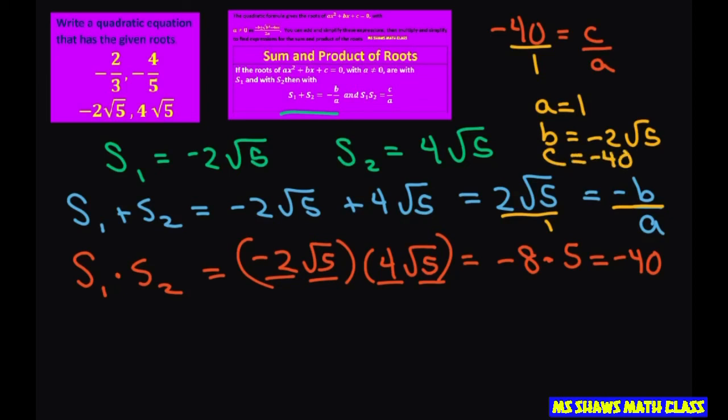And you just write your quadratic equation in standard form. So that's going to be x squared minus 2 square root of 5x minus 40 equals 0.